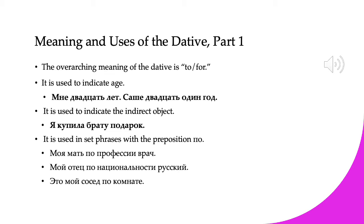It is also used for expressions to indicate age. For example, мне двадцать лет, which is literally 'to me are twenty years.' Саше двадцать один год — 'Sasha is twenty-one years.' So in Russian we say 'to me is a certain number of years' instead of 'I am a certain number of years' — we use the dative: 'to me is a certain number of years.'